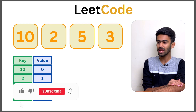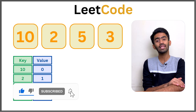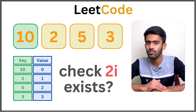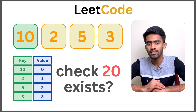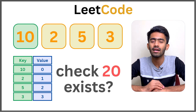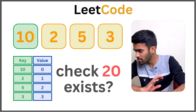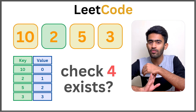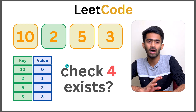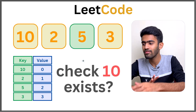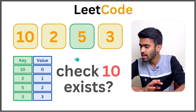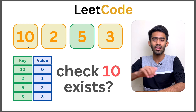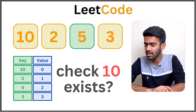What do we do with this hash map? We will traverse the array. We start at 10 — check if 20 is in the hash map. It is not there, so we go next. Then 2 — 2 times 2 is 4. There is no 4 in the hash map. Then 5 — 5 times 2 is 10. There IS 10 in the hash map, at index 0. Done — we have a pair and we return.